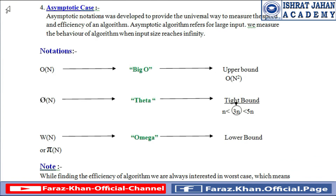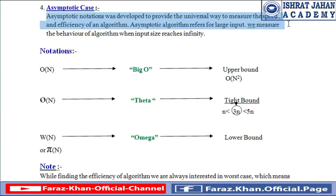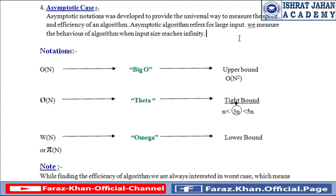Now, asymptotic case. Asymptotic notations were developed to provide a universal way to measure the speed and efficiency of an algorithm. Asymptotic analysis precisely refers to measuring the behavior of an algorithm when the input size reaches infinity — whenever we want to analyze large or infinite data, we prefer asymptotic notations. We have three different asymptotic notations.